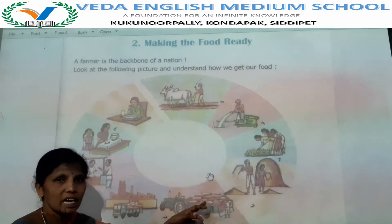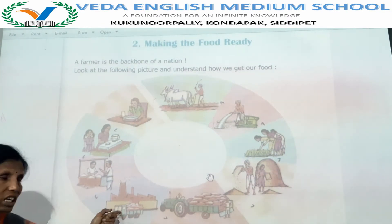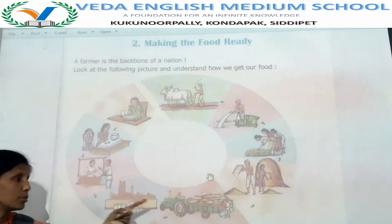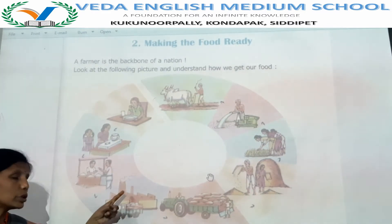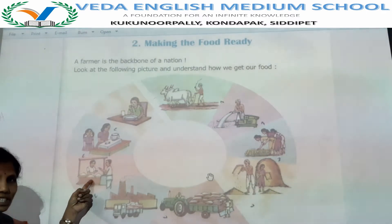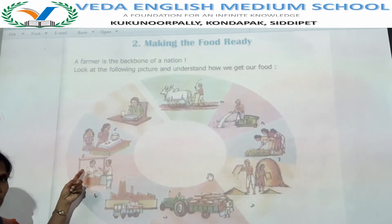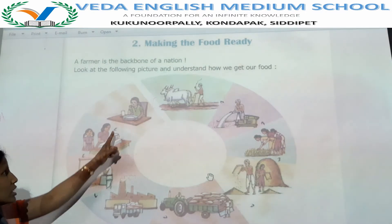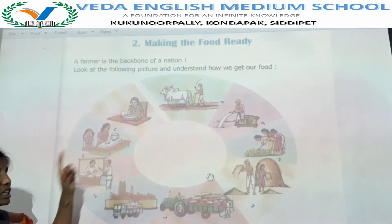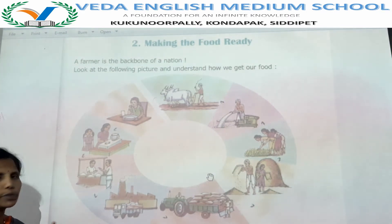Grains are filled in the bags and transported to mills. Here the grains are milled — paddy grains are milled to rice. That rice is sold in the shops. People buy the rice from the shops, and they cook the food. At last, the food comes to our plate — we eat the food.